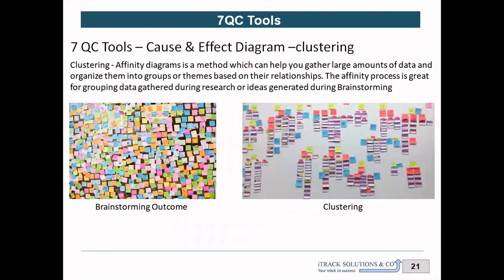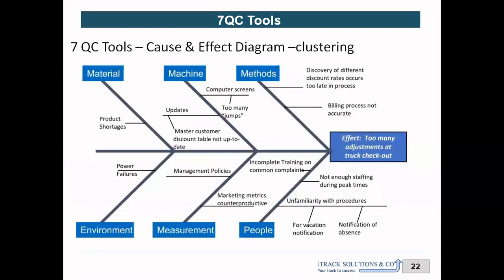Once brainstorming is done, the next step is to convert or segregate those root causes into affinity clustering. Affinity clustering — also called an affinity diagram — means grouping root causes under common headers. Once we complete this affinity clustering, we convert it into a fishbone diagram.